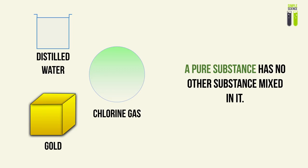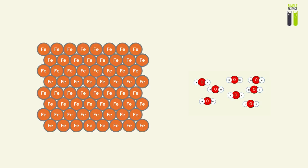A pure substance is a substance that has nothing else apart from the primary substance mixed in it. In our control volume, there is only one homogeneous type of substance. Examples include distilled water, which contains only H₂O molecules; chlorine gas, which contains only chlorine molecules; and gold. Note that a pure substance can be an element or a compound. For pure iron, at the atomic level, we would find only iron atoms and ions, not adulterated with anything.